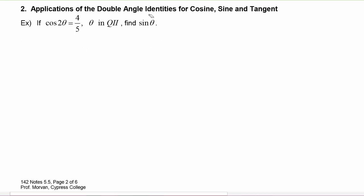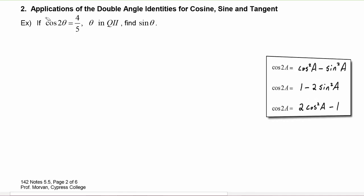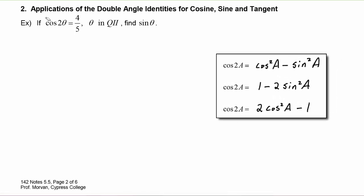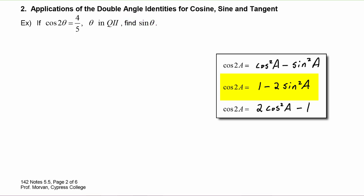In this first example, we are given that cosine of two theta is equal to four-fifths, that theta lives in quadrant two, and we have to find the sine of theta. So we're given a double angle for cosine, and remember that there were three forms of the double angle identity. We have to choose which one we want to use, and in this case, because we are being asked to find sine of theta, it makes sense to use the identity that involves sine.